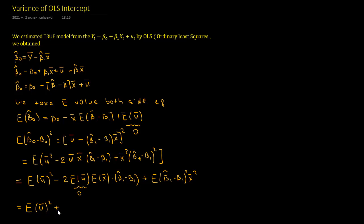Since we know that the expected value of u bar is zero, the middle term drops out. x bar is a constant so it can go outside, and the remaining term is x bar squared times the expected value of beta 1 hat minus beta 1 squared, which gives us the variance of beta 1 hat.